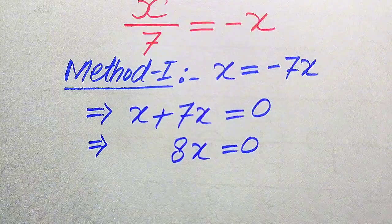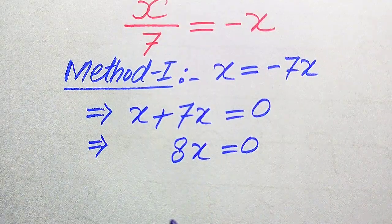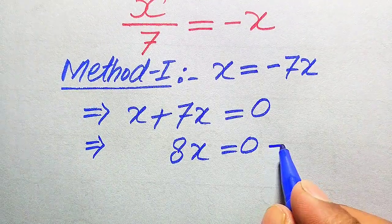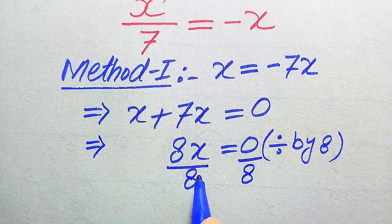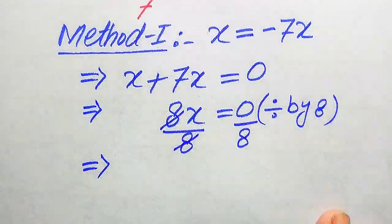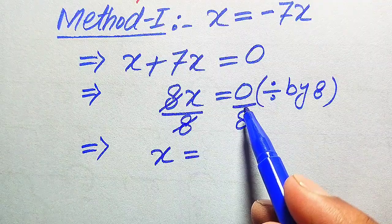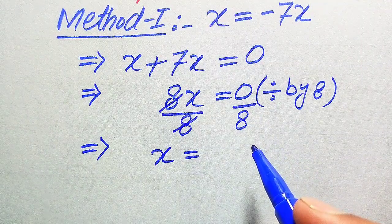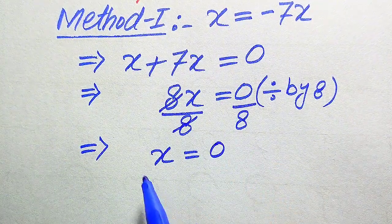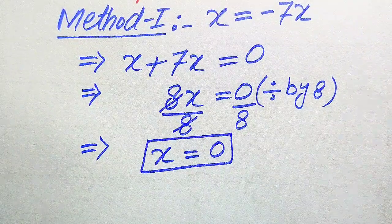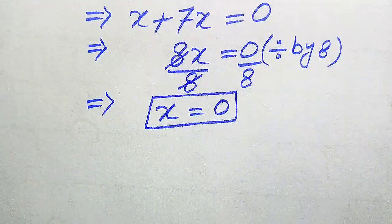Our target is to find the values of x, so we divide both sides by 8 to remove the 8 from the left hand side. We divide each term by 8, so 8 divided by 8 cancels out, leaving x on the left hand side. On the right hand side, 0 divided by 8 equals 0. So from here we get x equals 0, which is the only root found in Method 1.